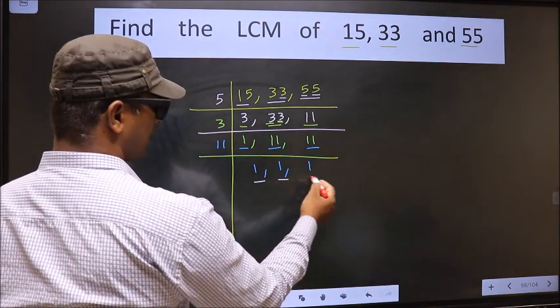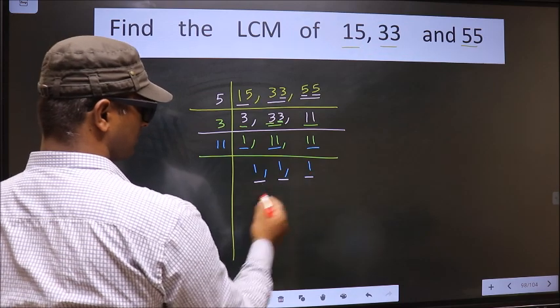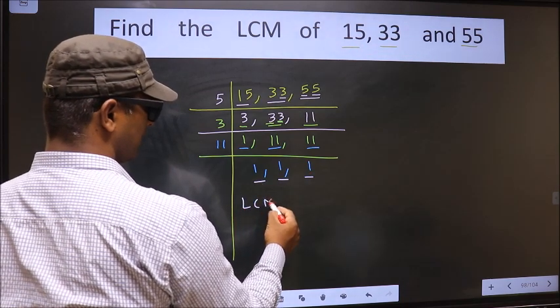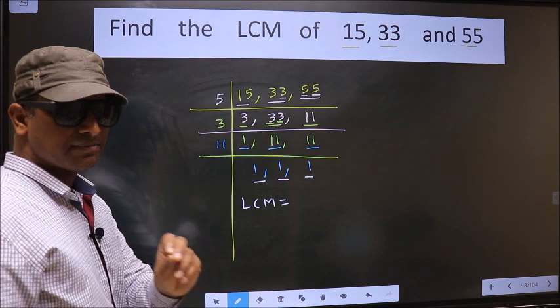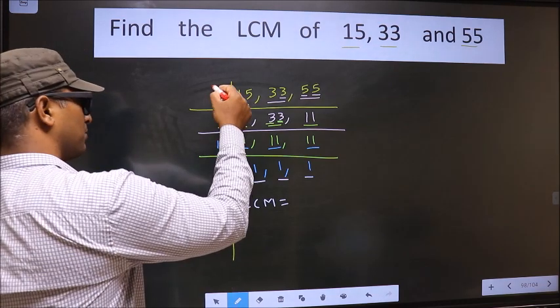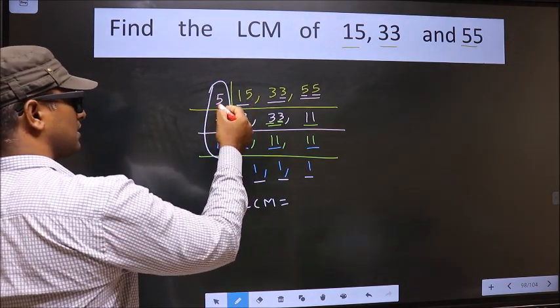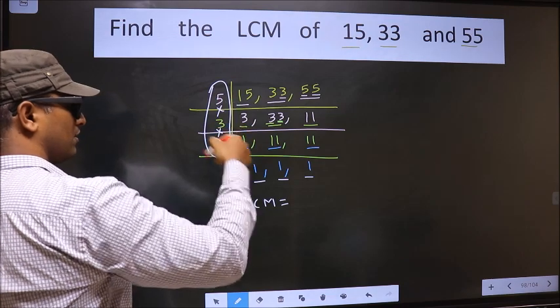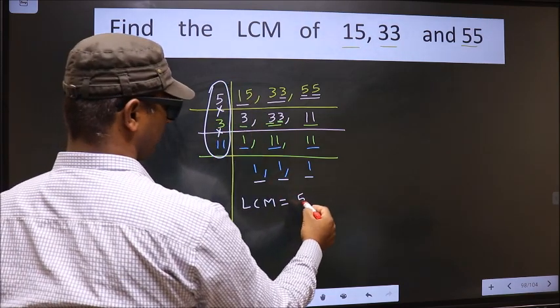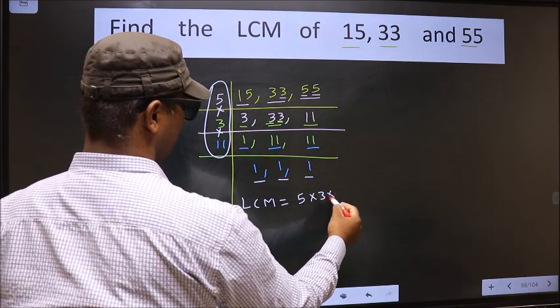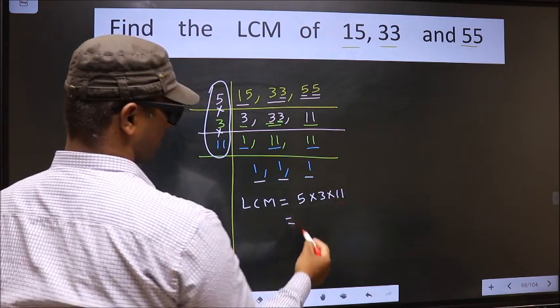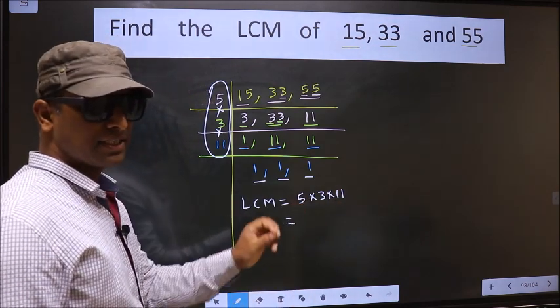We got 1 in all three places. So our LCM is the product of these numbers - that is 5 into 3 into 11. Now let us multiply these numbers.